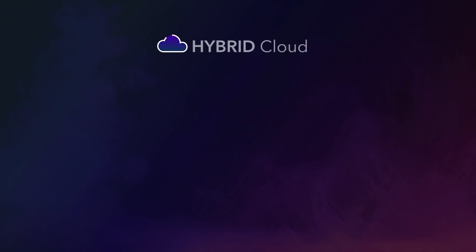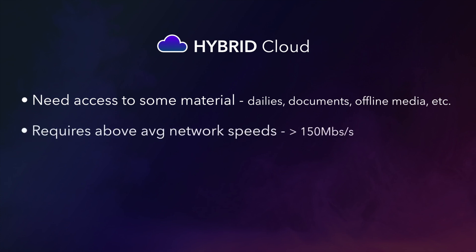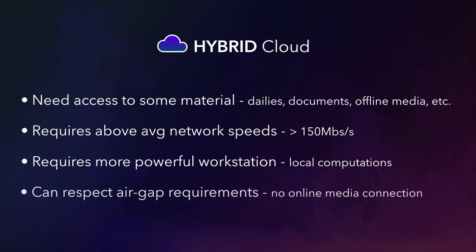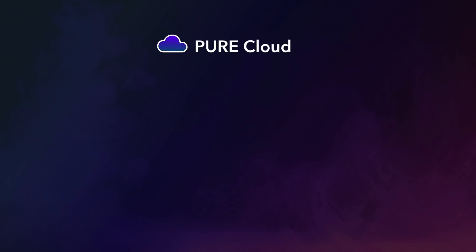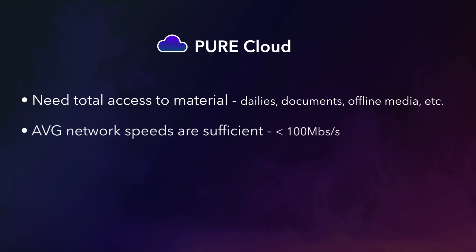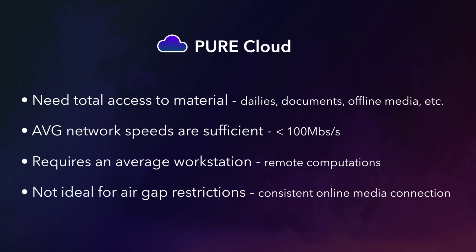A hybrid workflow accesses some but not all material from the cloud. It requires above average internet speeds for optimum performance, a more powerful computer workstation because computations will be done locally, and it enables some workflows to remain partially air gapped. A pure cloud workflow requires remote users to have total access to all material through internet connections. It works with average or even below average internet speeds, requires only an average workstation or laptop, but requires the collaborator to be online all the time — so it's not ideal for workflows that require air gaps.